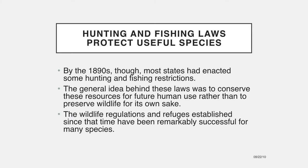The wildlife regulations and refuges established since that time have been remarkably successful for many species. A hundred years ago, there were an estimated half a million white-tailed deer in the United States; now there are some 14 million. Wild turkeys and wood ducks were nearly gone 50 years ago. By restoring habitat, planting food crops, transplanting breeding stock, building shelters, and protecting these birds during breeding season, we have restored populations of these beautiful and iconic birds to several million each.